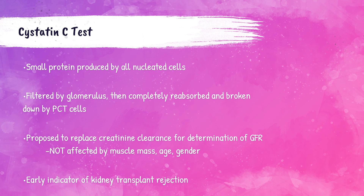Cystatin C is a tiny protein produced by nucleated cells. It is filtered by the glomerulus and is completely reabsorbed by the PCT (proximal convoluted tubule). This protein is not affected by muscle mass, age, or gender, and is proposed to potentially replace creatinine clearance for determining glomerular filtration rate. Cystatin C can also be used as an indicator for transplant rejection in patients who have received a donated kidney.